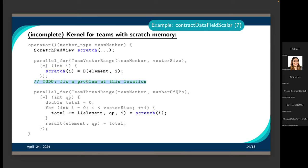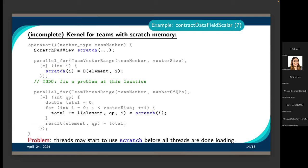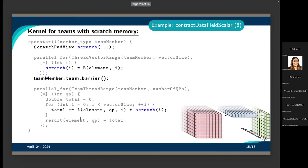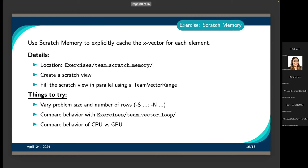There's one important thing to handle: a thread could load a value into scratch and then move on to the quadrature loop where it will attempt to access every entry in scratch. Some threads could start using scratch before all threads are done writing to it. So it's very important that we have a team barrier after loading the scratch view, so that every thread syncs up before going into the loop and trying to use the scratch memory. The team barrier is critical, and in the exercise you'll need to insert it in the right spot.